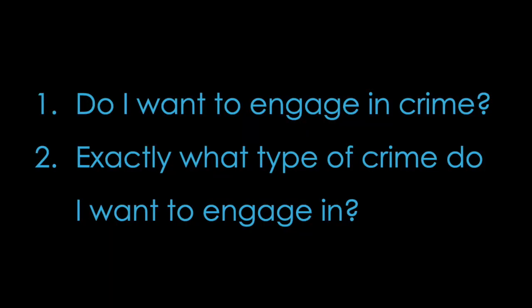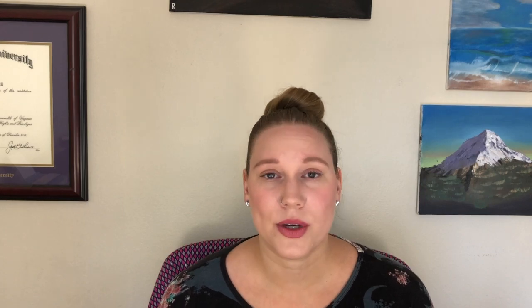Rational choice theory was published in 1986 by Cornish and Clarke and it says that individuals are rational beings when deciding whether or not to commit a crime. They're weighing out the pros and cons and taking time to decide whether or not this is something they should do. Rational choice theory is very particular in saying that people first need to decide whether or not they even want to engage in crime, and then once they decide, they have to decide exactly what kind of crime they want to engage in. If someone decides they're going to commit a robbery, they now have to decide if it will be of a commercial business or a residential home.